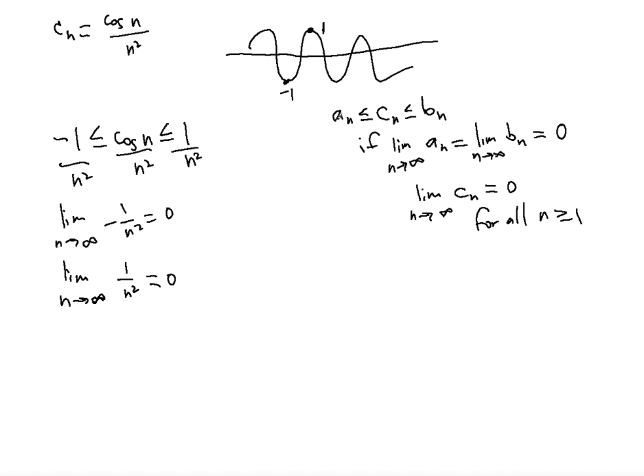So now using the squeeze theorem that we just talked about, for all n greater than or equal to one, it must be true that the limit as n approaches infinity of cosine n over n squared will also be zero.